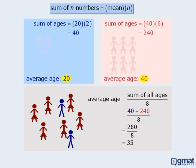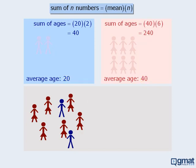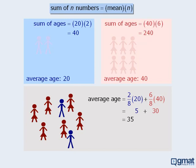Now let's look at a different way to find the average age of the combined population. We need to recognize that the average age of the entire population depends on the proportion of men in the group and the proportion of women in the group. In this population of eight people, we have two men, so the men comprise two-eighths of the combined population. We multiply this fraction by the average age of the male population, which is 20. Then we add the contribution of the female population: six women comprise six-eighths of the combined population, multiplied by the average age of 40. When we simplify, the average age of the combined population is still 35.